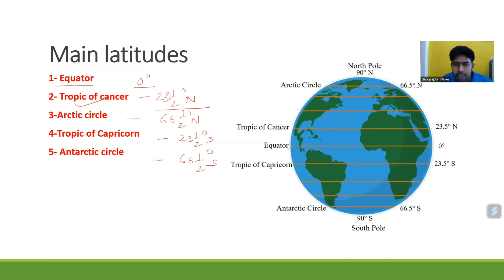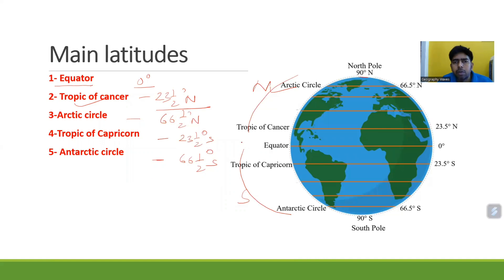Here you can see the equator at 0 degrees, then the Tropic of Cancer, then 66.5 degrees which is the Arctic Circle - these are all in the northern hemisphere. The corresponding lines in the southern hemisphere mirror these positions.